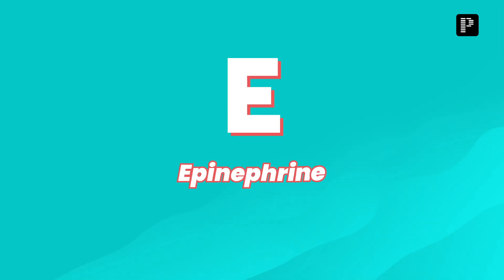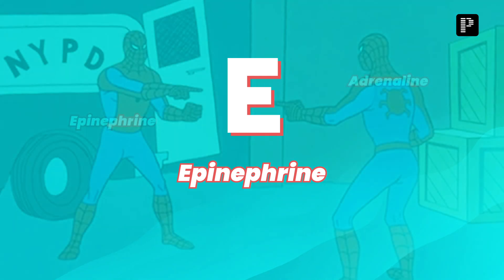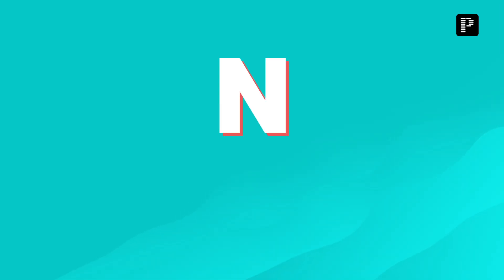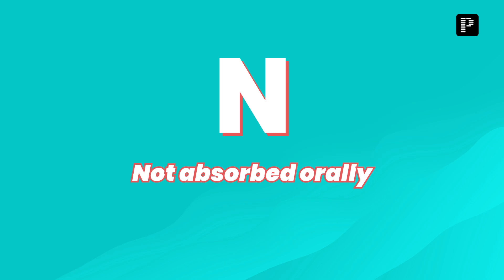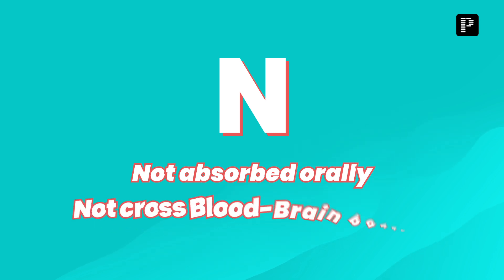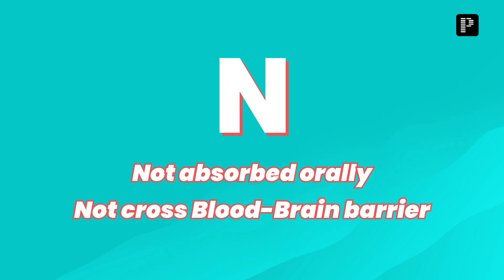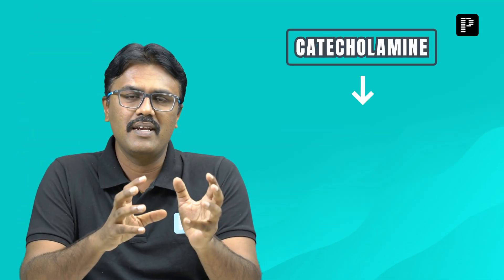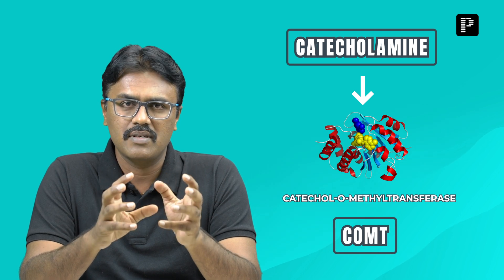The next letter is E — E is for epinephrine, which is another name for Adrenaline. The next letter is N — N stands for not absorbed orally, and it will not cross the blood-brain barrier. The reason is simple: since it is a catecholamine, it is metabolized by the enzyme COMT, so it is not absorbed orally and doesn't enter the brain.